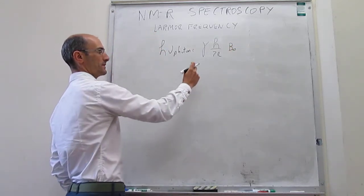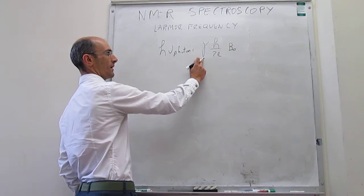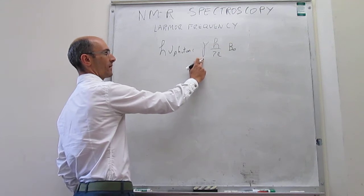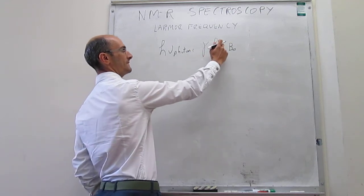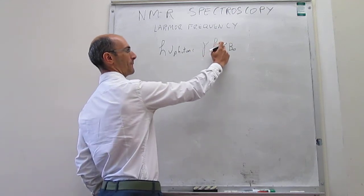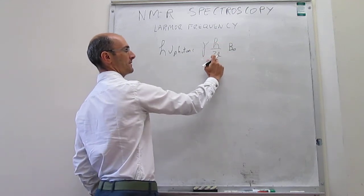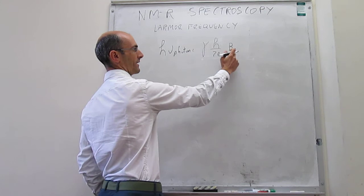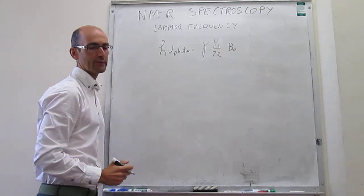In that expression, we have the magnetogyric ratio, Planck's constant, 2π, and the external magnetic field B₀.